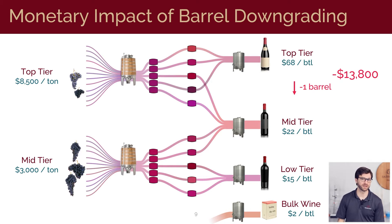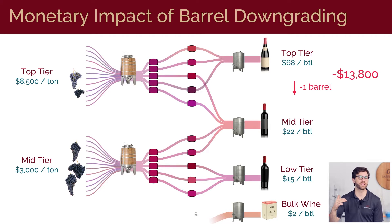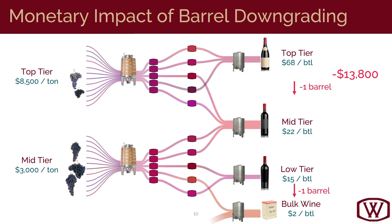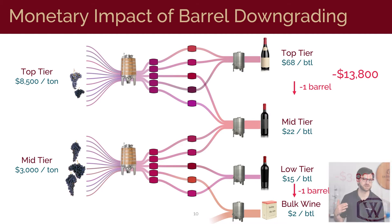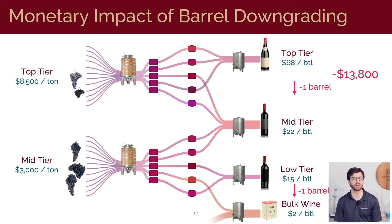Similarly, if a barrel from our lower tier barrel SKU doesn't make the cut and ends up being relegated down to our bulk program, that's a lost revenue opportunity of $3,900. And as you might expect, these losses are more significant for higher tier SKUs where each individual barrel has a higher value.